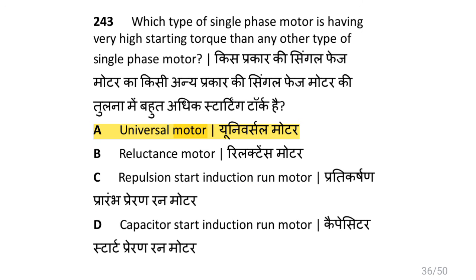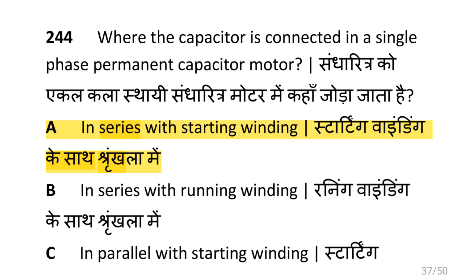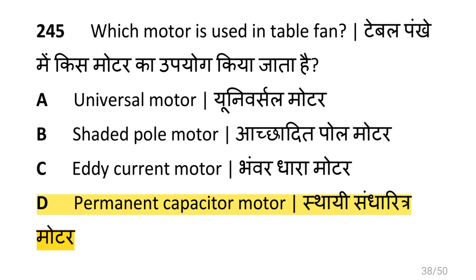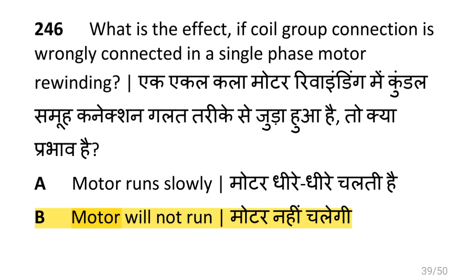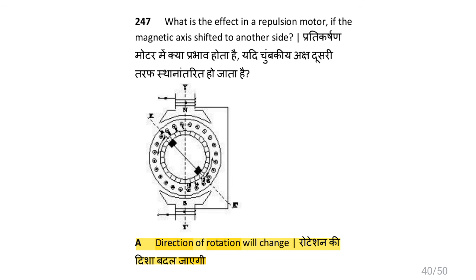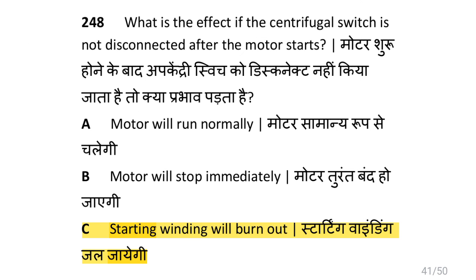Which type of single phase induction motor has very high starting torque compared to any other type of single phase motor? That is universal motor. Where is the capacitor connected in a single phase permanent capacitor motor? That is in series with starting winding. Which motor is used in table fan? That is permanent capacitor motor. What is the effect if coil group connection is wrongly connected in a single phase motor rewinding? That is the motor will not run. What is the effect on repulsion motor if the magnetic axis is shifted to another side? The direction of rotation will change. What is the effect if the centrifugal switch is not disconnected after the motor starts? That is the starting winding will burn out.